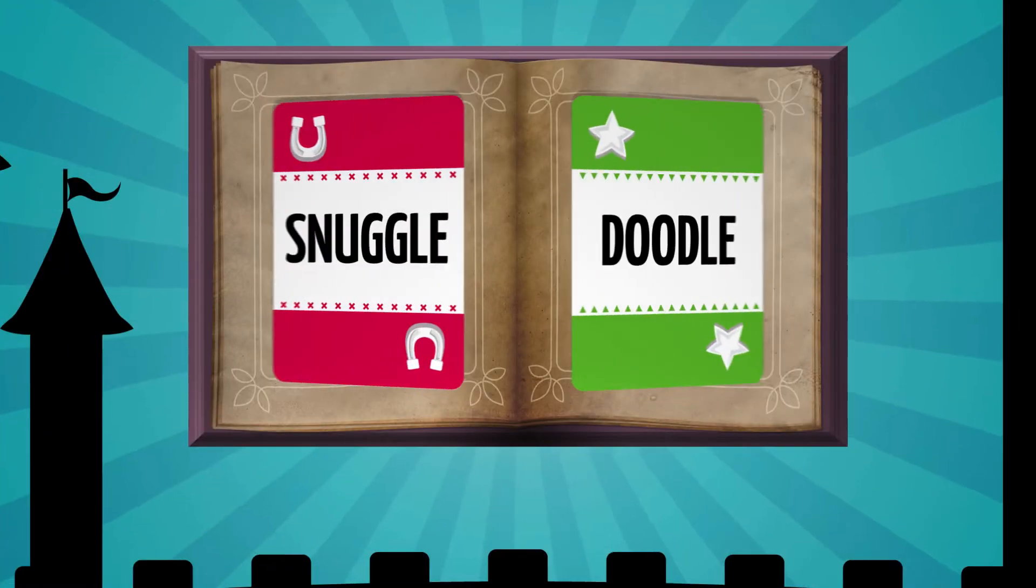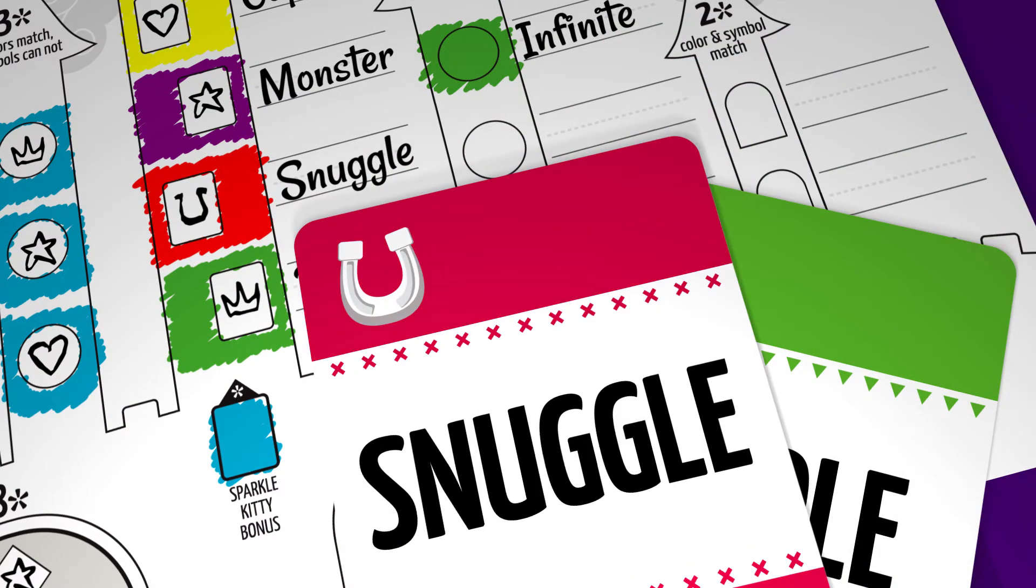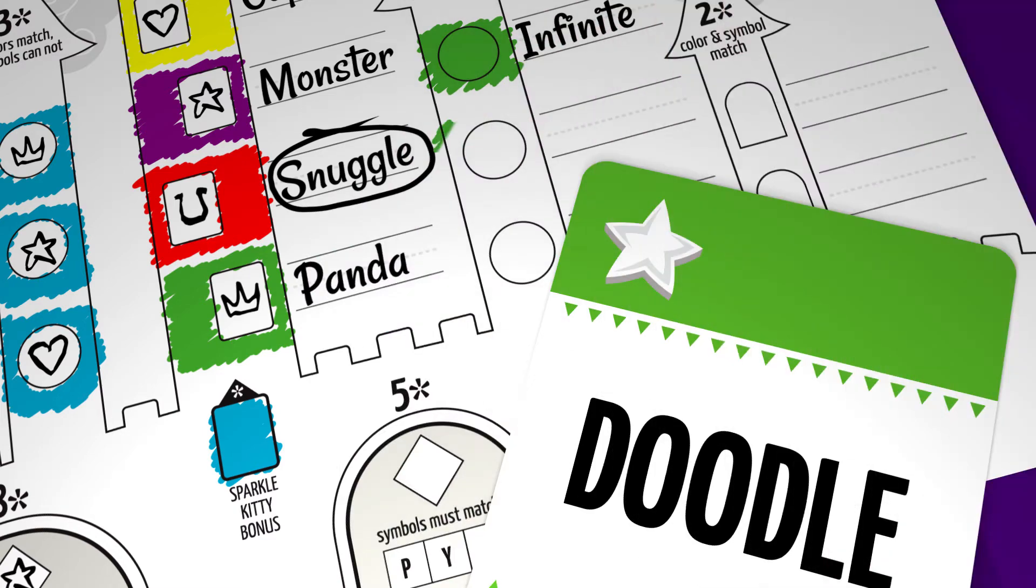You will be penalized if you write a magic word twice, so when a word appears again you can earn bonus points by circling the word and shouting double and the word. Double Snuggle! You may then choose to use the other card on the same turn.